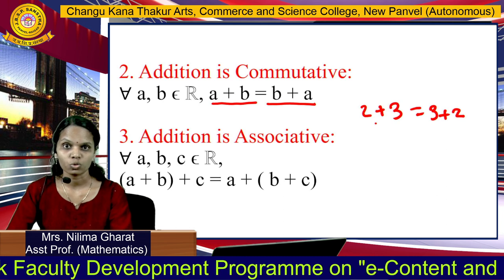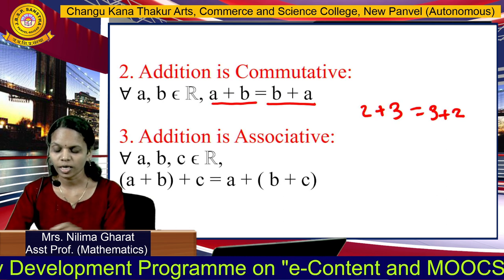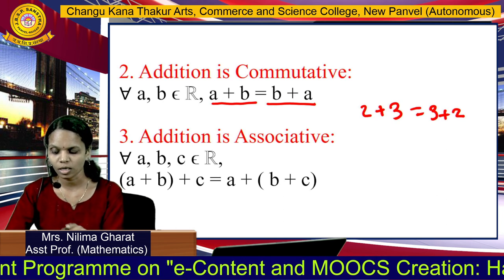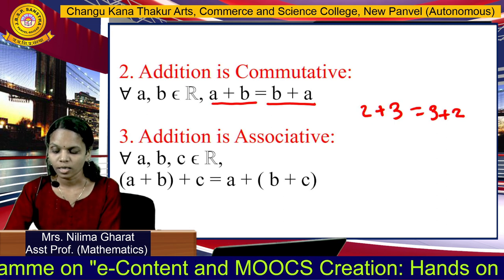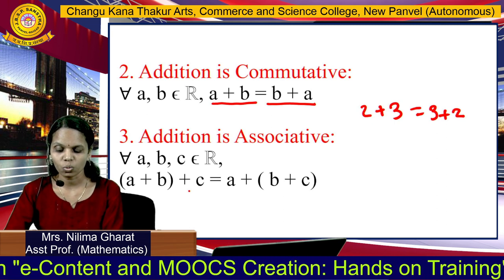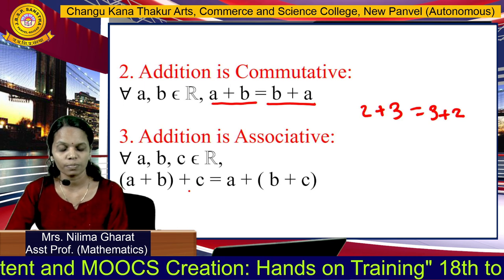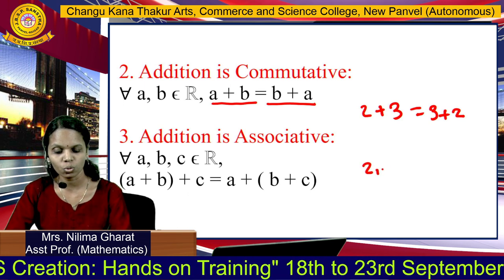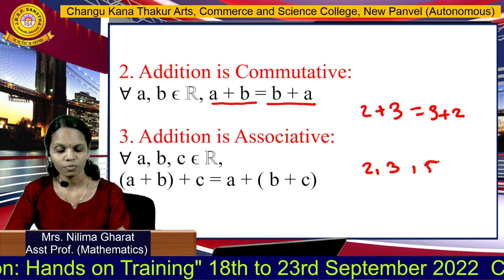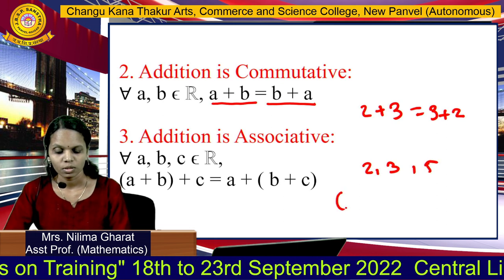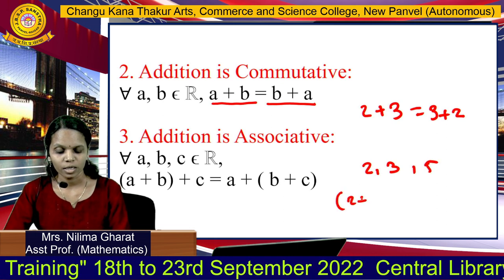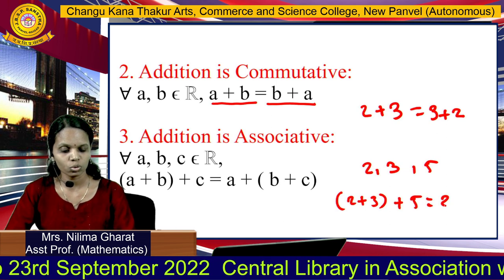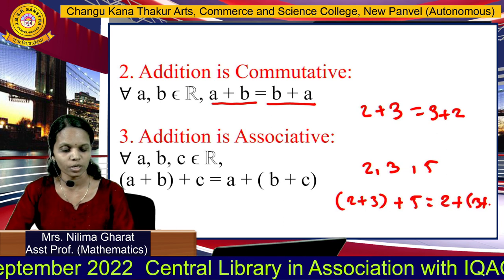The third property is the associative property. For any three real numbers A, B, C, we have (A plus B) plus C equals A plus (B plus C). For example, taking real numbers 2, 3, and 5: (2 plus 3) plus 5 equals 2 plus (3 plus 5).